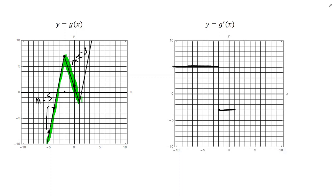The third piece of g is also linear, with a constant slope. Picking two points, it looks like we travel up 5 over 1 again, so the slope is 5. From x equals 1 out to infinity, the slope is 5. G(x) is made up of three straight lines with constant slopes, so when I graph the derivative it's going to be made up of three horizontal lines.